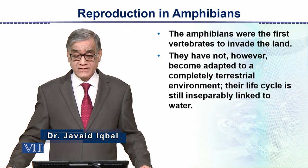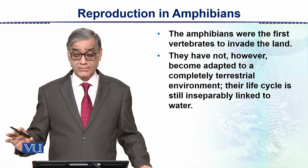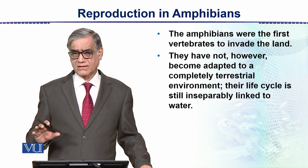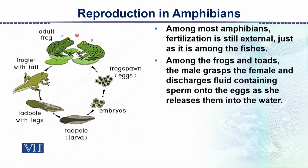The amphibians were the first vertebrates to invade land; however, they have not become fully adapted to a completely terrestrial environment — they will have to move back into water. Now, among most amphibians, fertilization is still external, just as it is among the fishes.